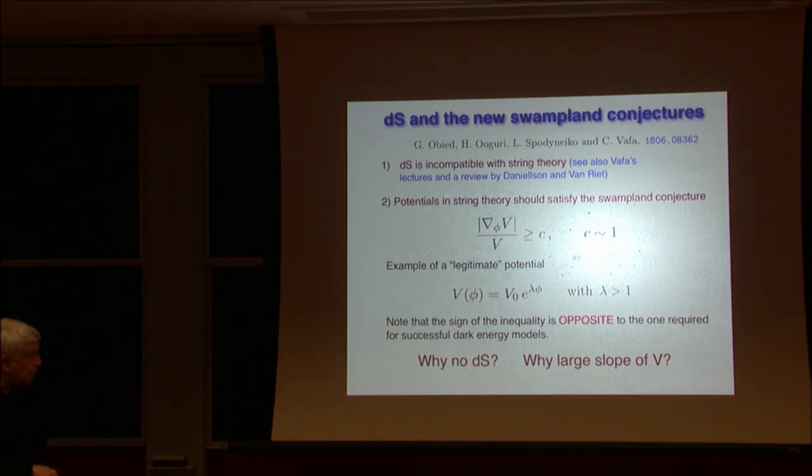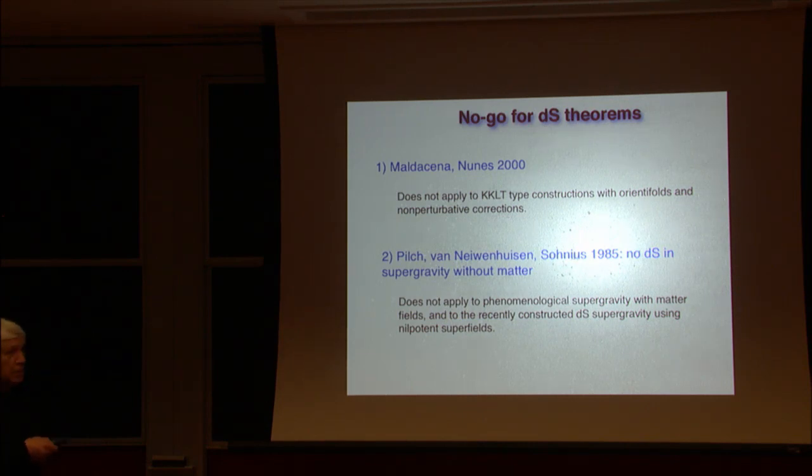So why no dS and why a large slope of V? And arguments which were suggested in the papers by them, they divided into several groups. One is Maldacena-Nunez theorem, which however may not apply to KKLT type of construction. Another is the theorem, which was proven in 1985 by Pilch and Neunheisen, who is saying that supergravity is incompatible with this. Now, the dS that doesn't appear in supergravity.